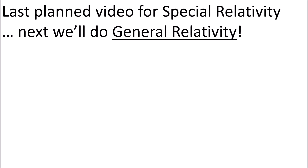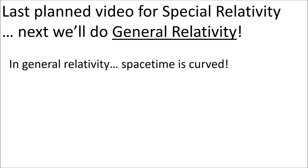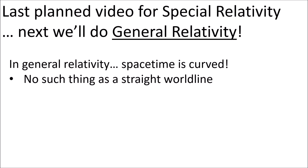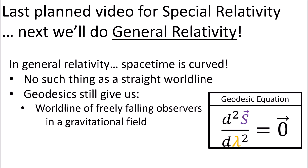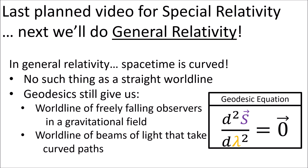So this video is the last video planned for special relativity. Next we're going to talk about general relativity. In general relativity, since spacetime is curved, there is no such thing as a straight world line. We're going to find that even though spacetime is curved and there is no such thing as a straight world line, the geodesic equation can still give us the world lines of freely falling observers in a gravitational field and also beams of light that take curved paths in curved spacetime.